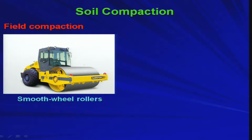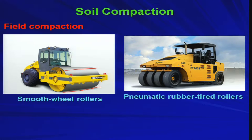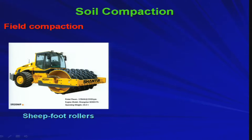Looking at photos of the different roller types: the smooth wheel roller has a cylindrical drum wheel that gives 100 percent coverage below it. The pneumatic rubber tired roller has flexible rubber tires providing 70 to 80 percent coverage along with pressure and kneading action. The sheepsfoot roller is like a smooth wheel roller but with a large number of projections on the drum — these projections provide kneading action and are very effective for clay type soil compaction.